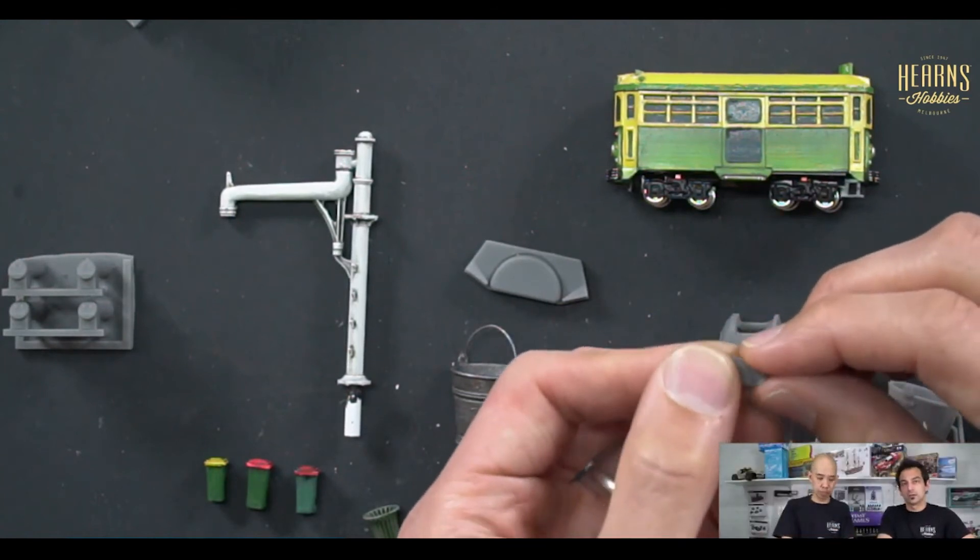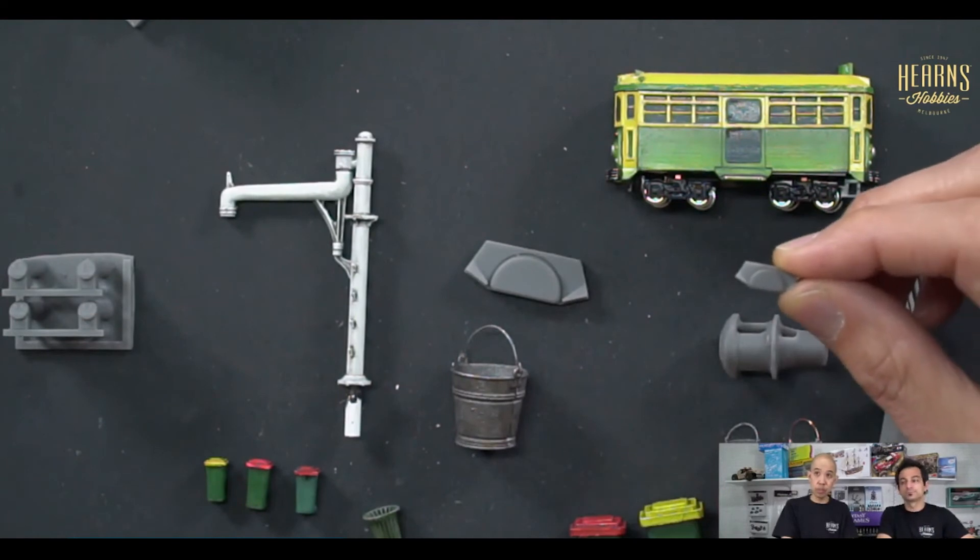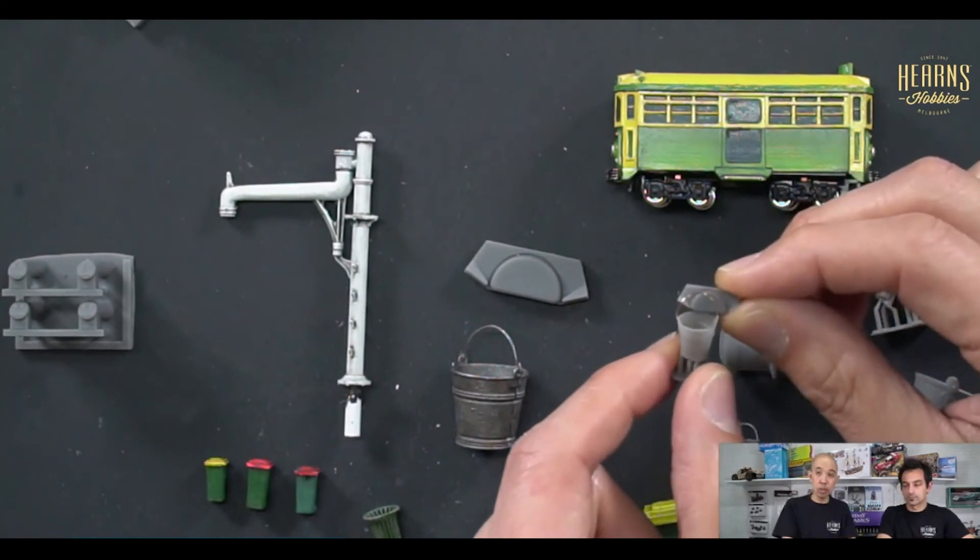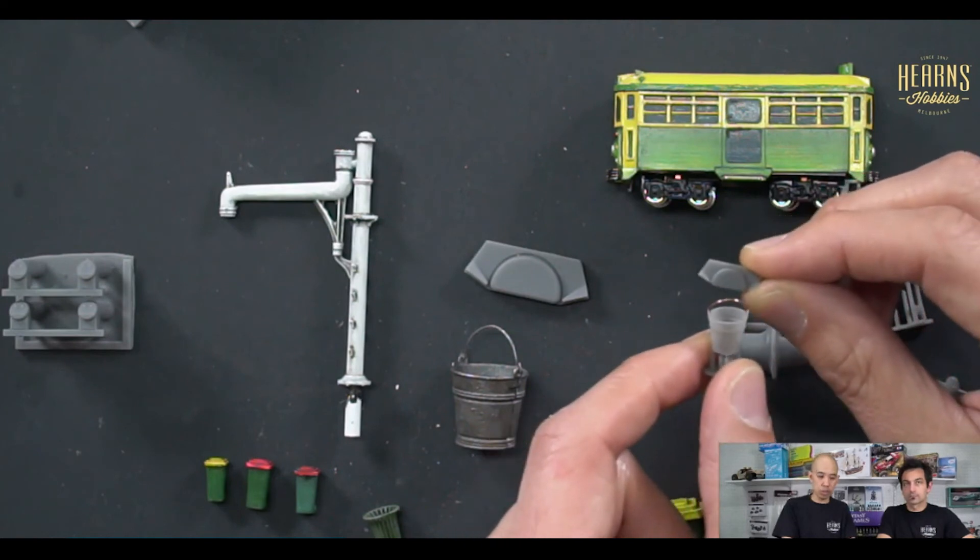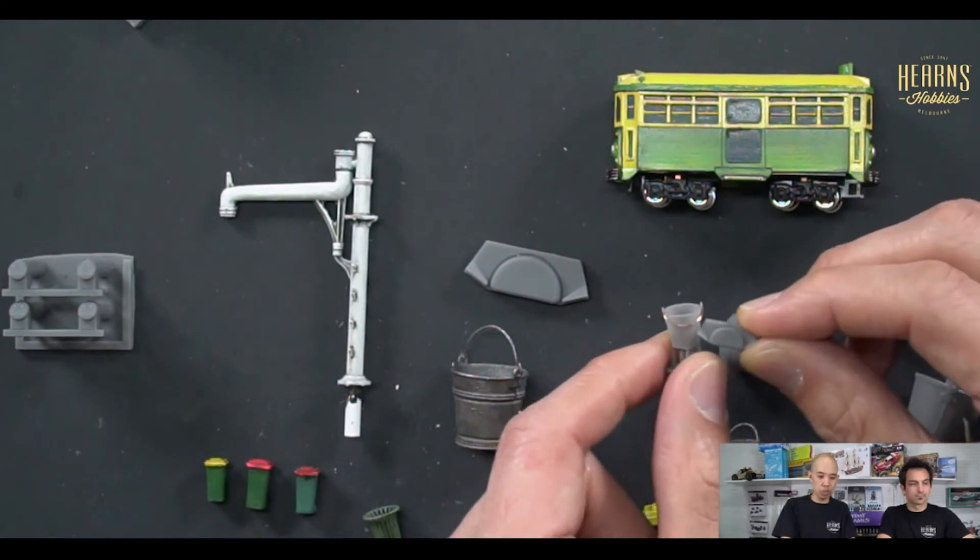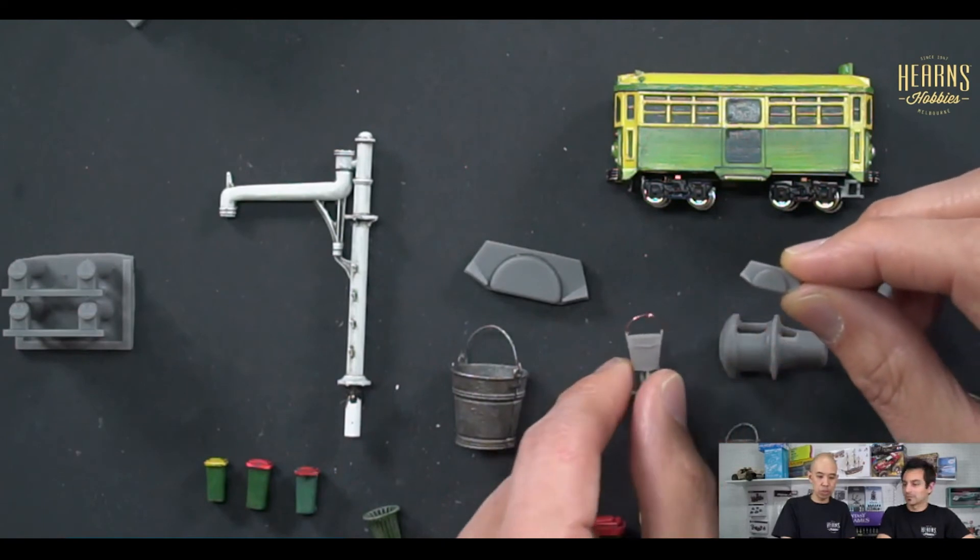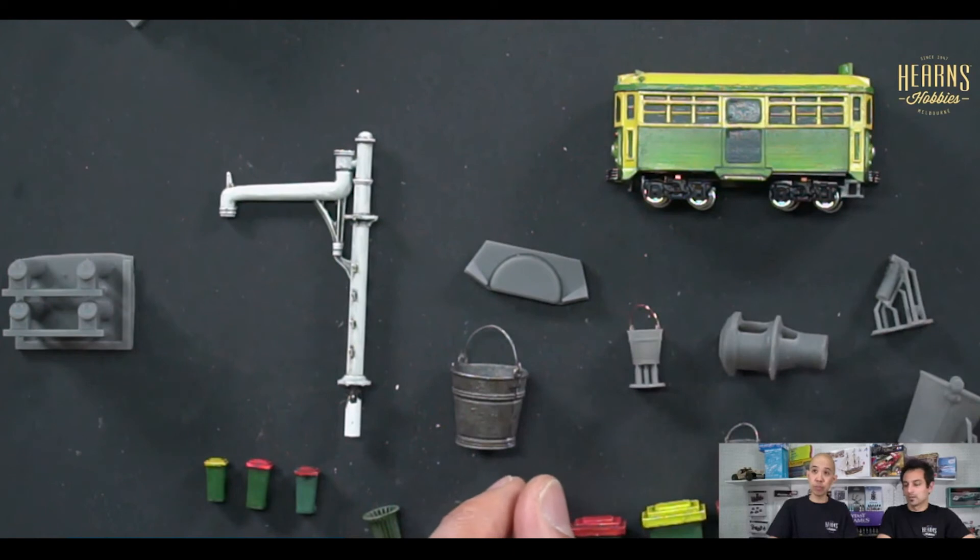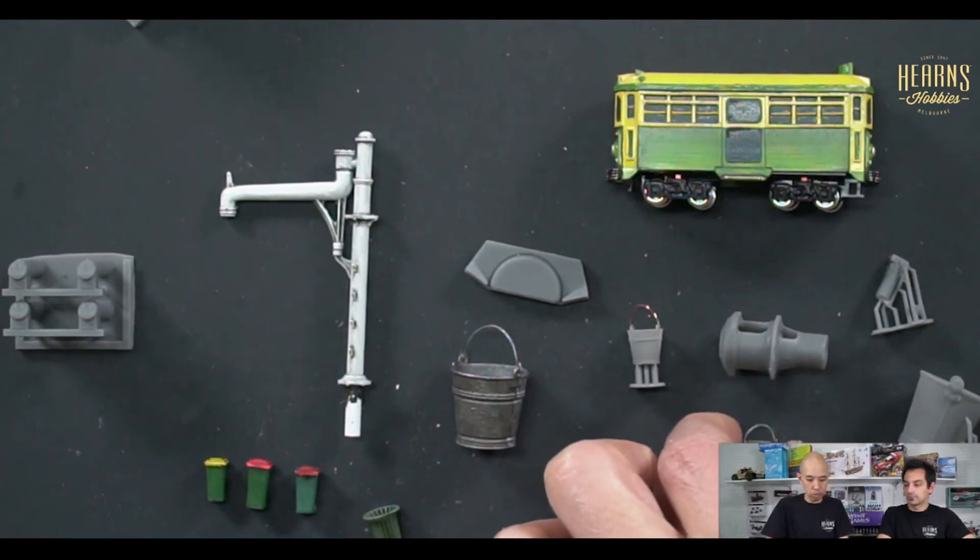Whilst we could actually have produced it, it would have been very delicate. We decided to go down the path of having a little jig. There's a little jig, and there's a little bit of the copper wire that's just been bent around the jig to get the shape. Just fit it through the little holes, and as you can see there, it looks perfect.